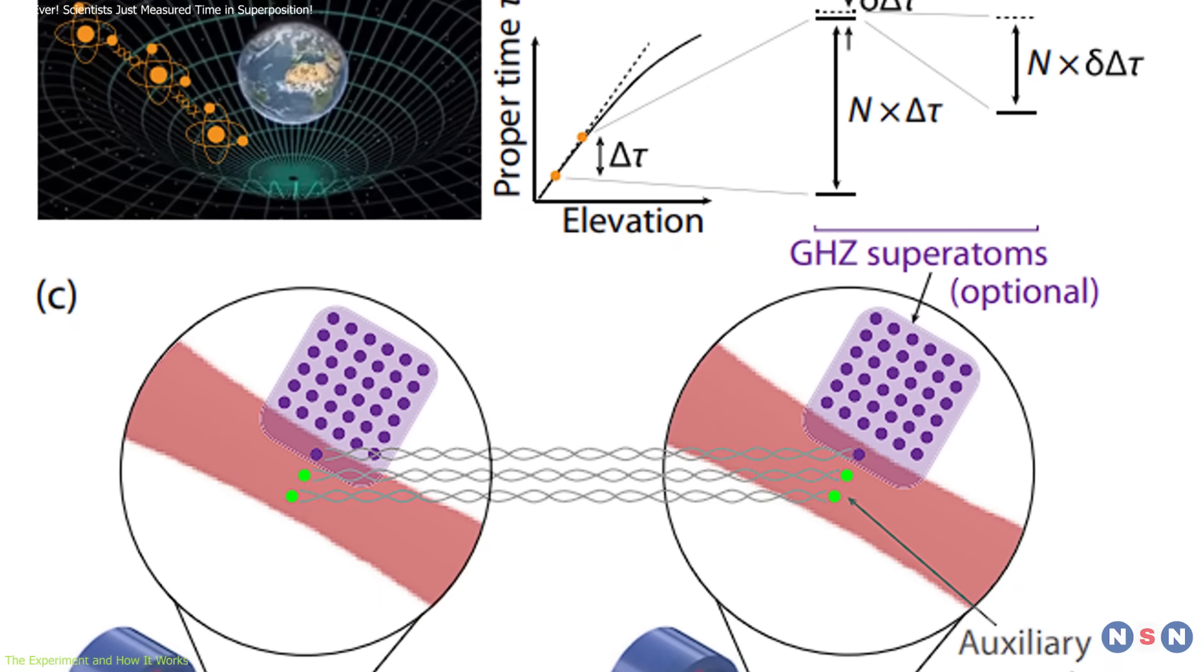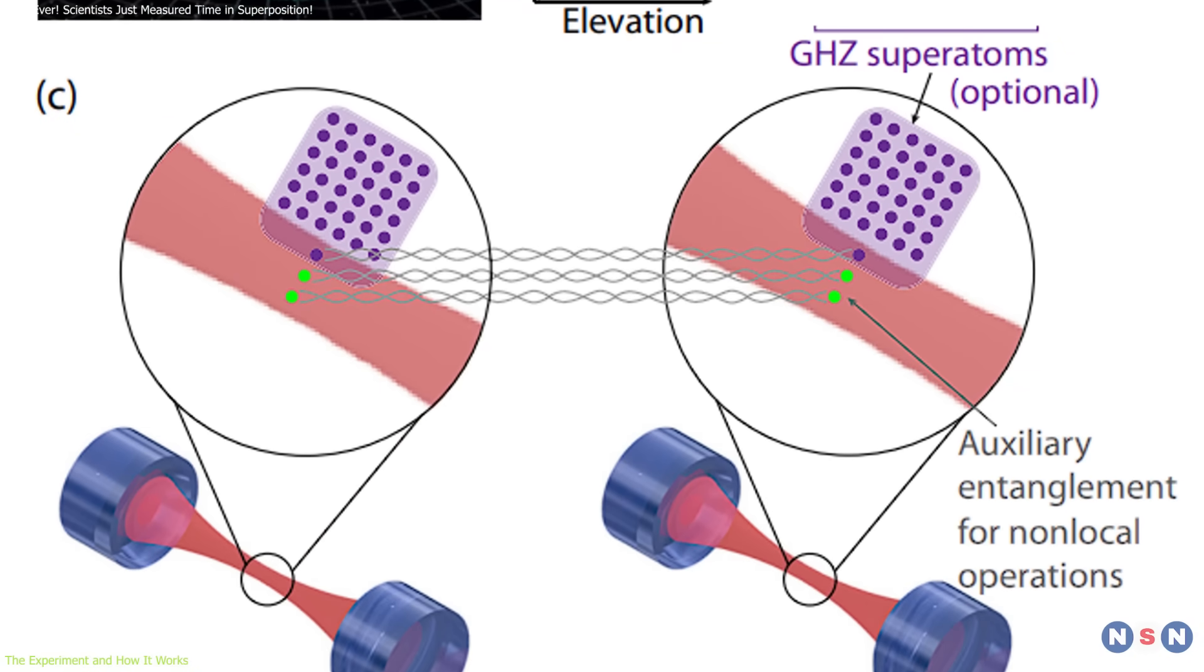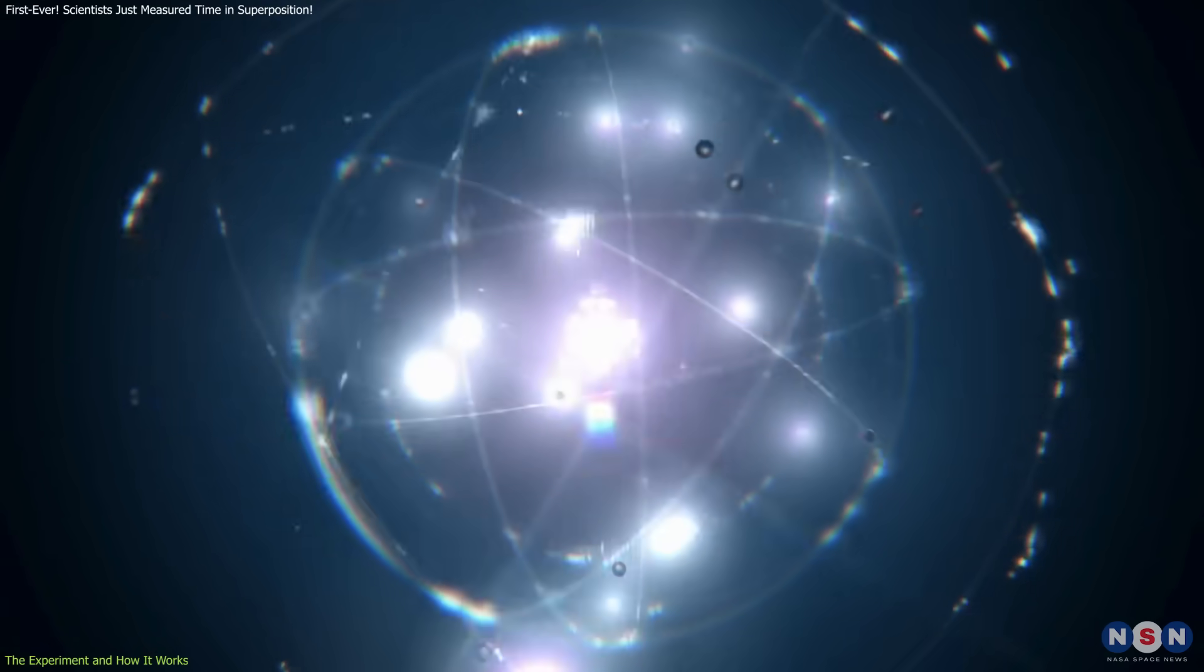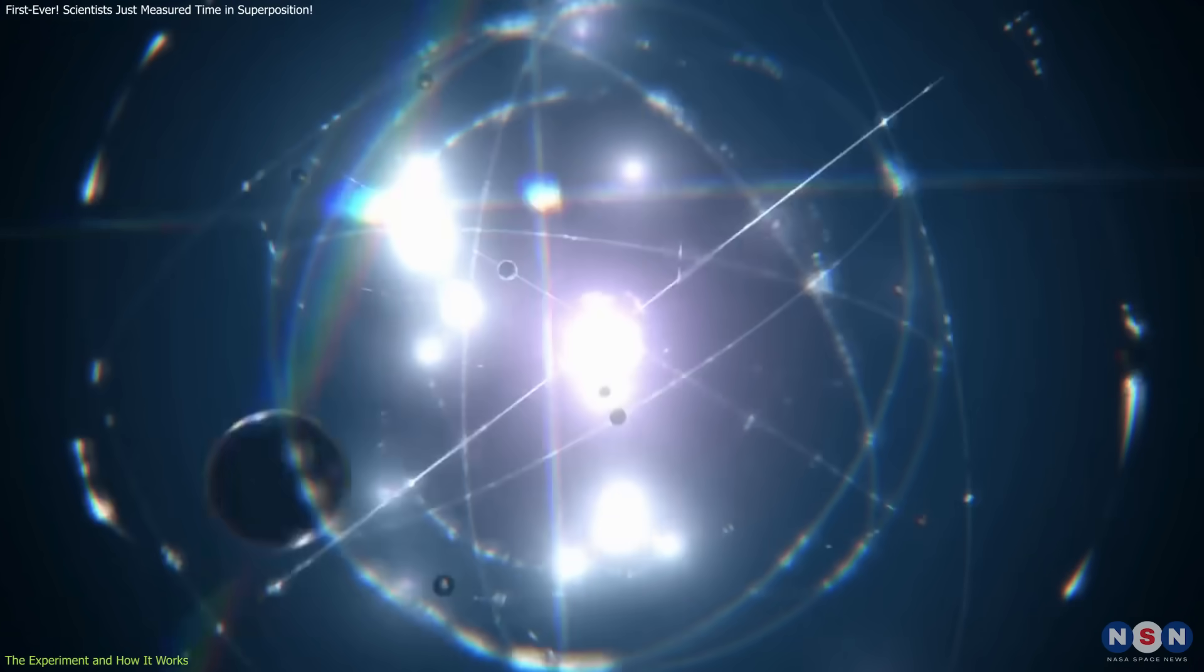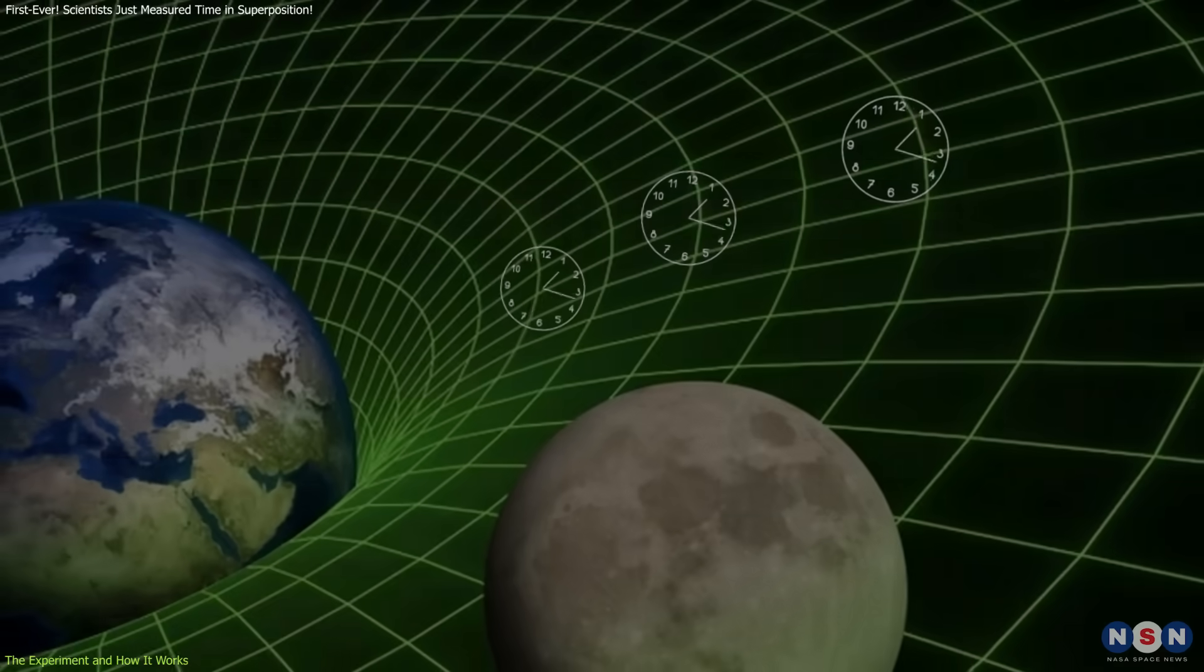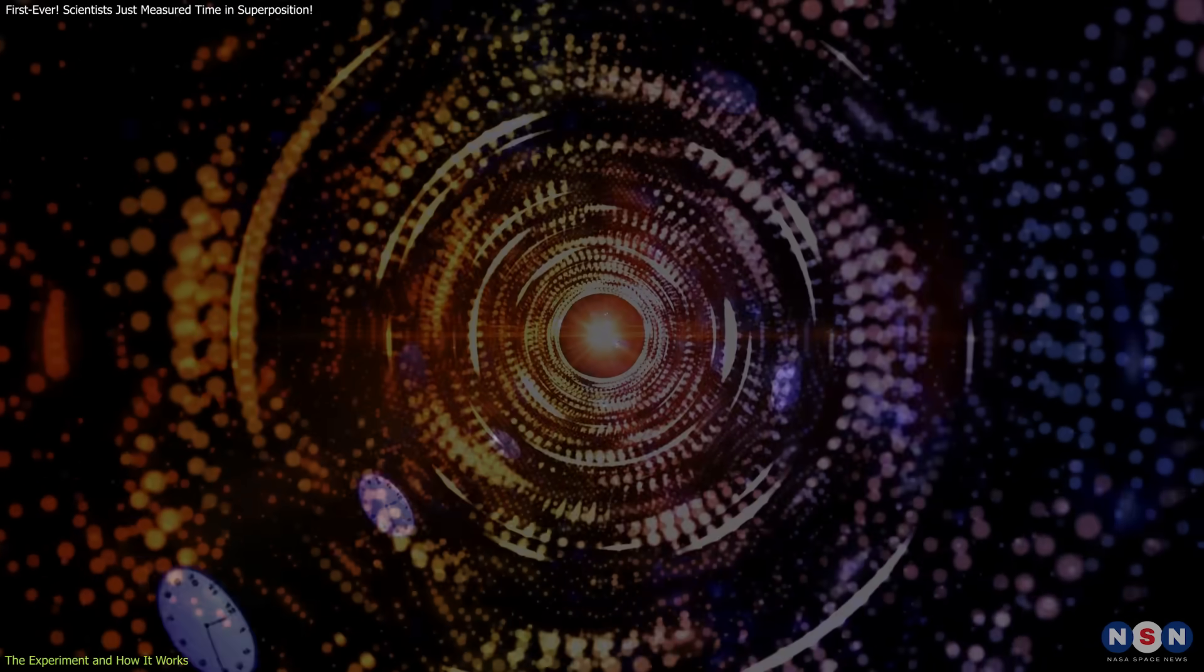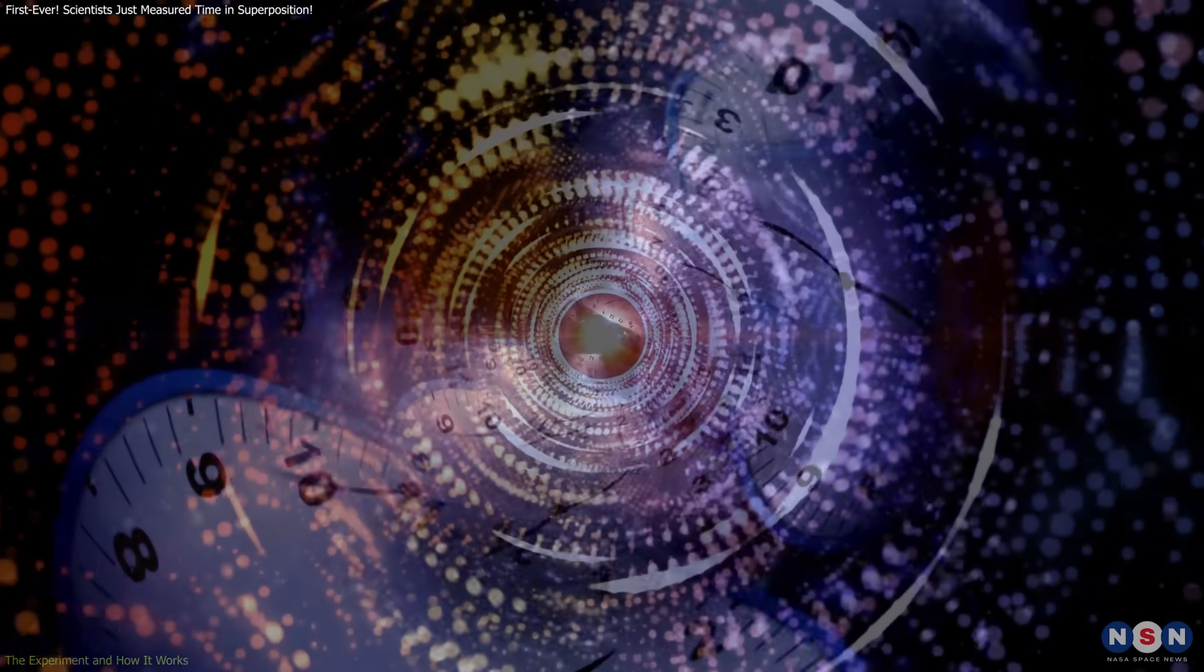This experiment doesn't rely on exotic equipment or futuristic theory. The building blocks—entangled clocks, photonic links, and quantum control systems—already exist. What's groundbreaking is how they're combined to explore a long untested question: Can quantum systems remain stable when time itself bends?